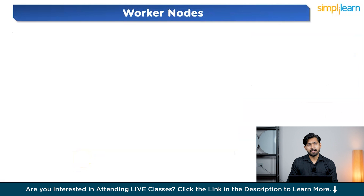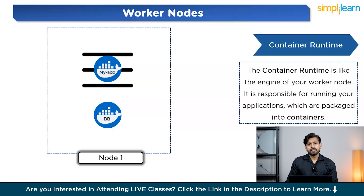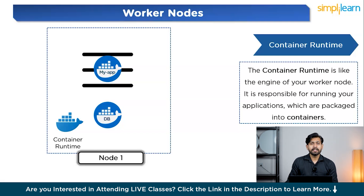The first process is container runtime. The container runtime is like the engine of your worker node. It is responsible for running your applications, which are packaged into containers. Containers are lightweight standalone units that contain everything your app needs to run, including code, system libraries, and dependencies. The container runtime is software that ensures these containers are properly managed and executed on each worker node. One of the most popular container runtimes is Docker. For example, you might have two containers — one for the frontend and one for the backend or database. The container runtime, such as Docker, ensures the containers for your web app are running on the worker node and manages them to make sure they are running as expected.